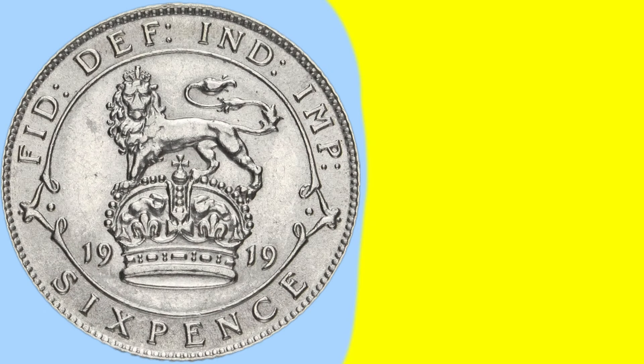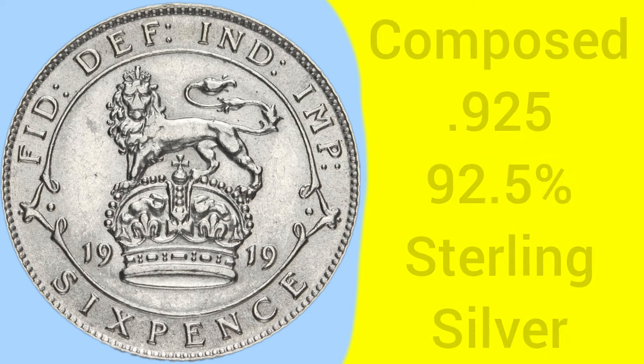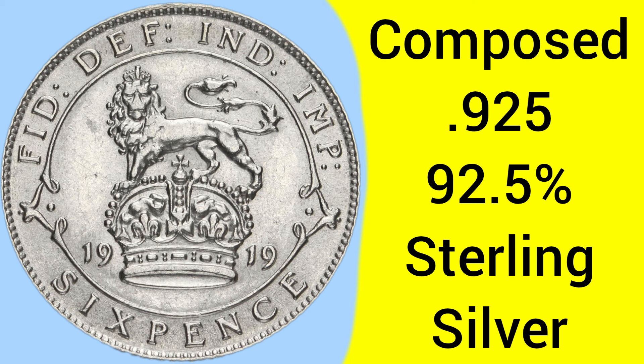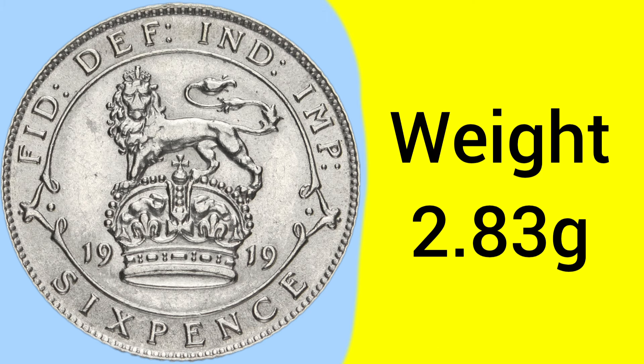So there's the design, and now on to the facts and figures. This is a coin minted at the Tower Hill Mint in London, where the Royal Mint was based between 1810 and 1975. The coin is composed of 0.925 silver — that is 92.5% pure silver, known as sterling silver — and this was the final year of sterling silver in coins, as it went to 50% the year after.